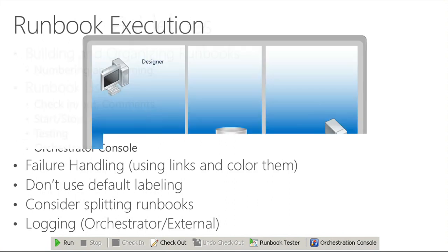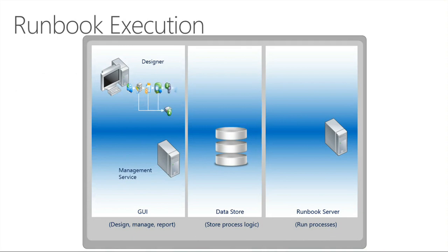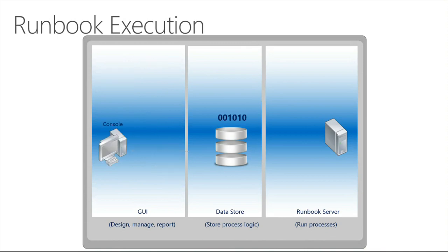From a runbook execution perspective, you design your runbooks in the designer; they go through the management service to the Orchestrator SQL Server database — the data store. The runbook servers grab those runbooks from the data store, execute them locally, and update status back to the data store. The console grabs that data from the data store and makes it visible so you can see real-time information about all running instances of your runbooks.